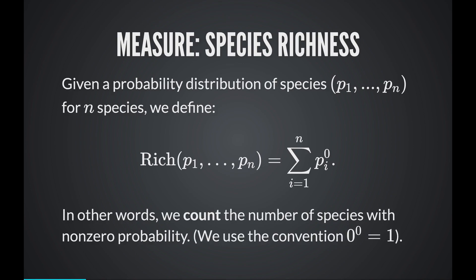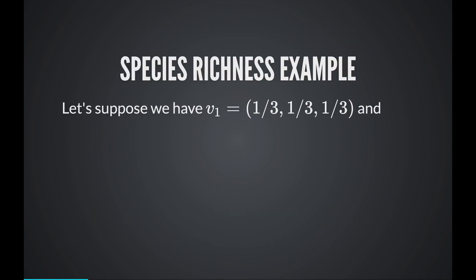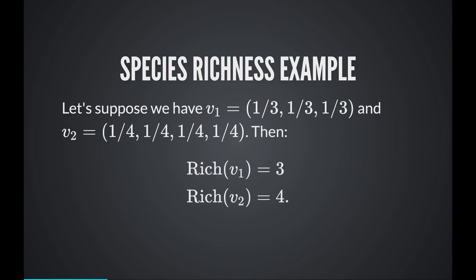Let's see an example. Suppose you have a region with three equally distributed species, and another region with four equally distributed species. Then the richness of the first region is 3 and the richness of the second region is 4. You're just counting the number of species, completely ignoring the proportion information that you've gathered.